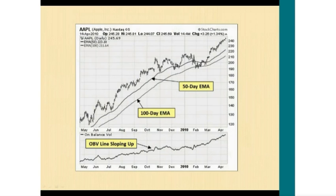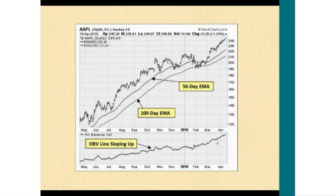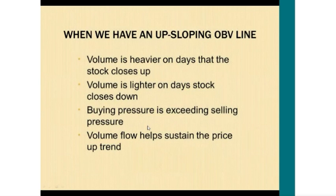Here's a price chart for Apple showing daily price movement. The chart below shows the on-balance volume line sloping up, confirming this upward price trend. The numeric value isn't very important — we just want to see this line sloping up to confirm the price trend and its sustainability. When we have an up-sloping OBV line, volume is heavier on days the stock closes up and lighter on days it closes down, indicating buying pressure exceeds selling pressure. The volume flow helps sustain the price uptrend.